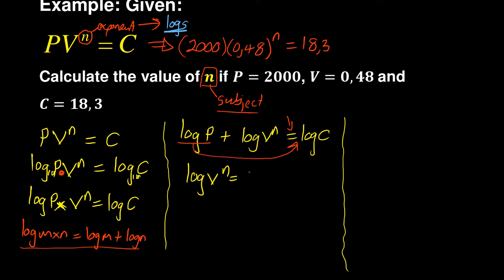So I will have log V to the power of n is equal to log C minus log P. Now I have got my n still as an exponent, but the reason why we introduced logs for the exponent is that this particular power will go down here such that I will have n log V is equal to log C minus log P.